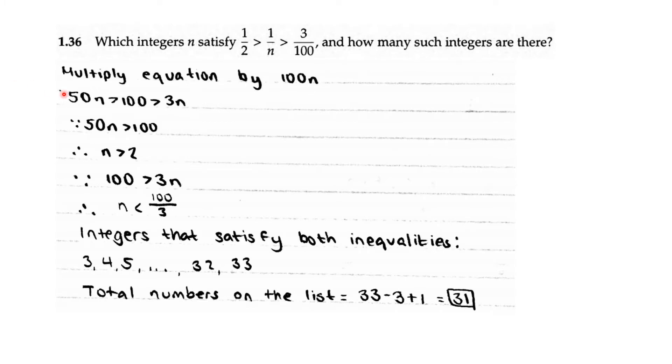AOP Counting on Probability problem 1.36: Which integers n satisfy 1 over 2 is greater than 1 over n, which is greater than 3 over 100, and how many integers are there?